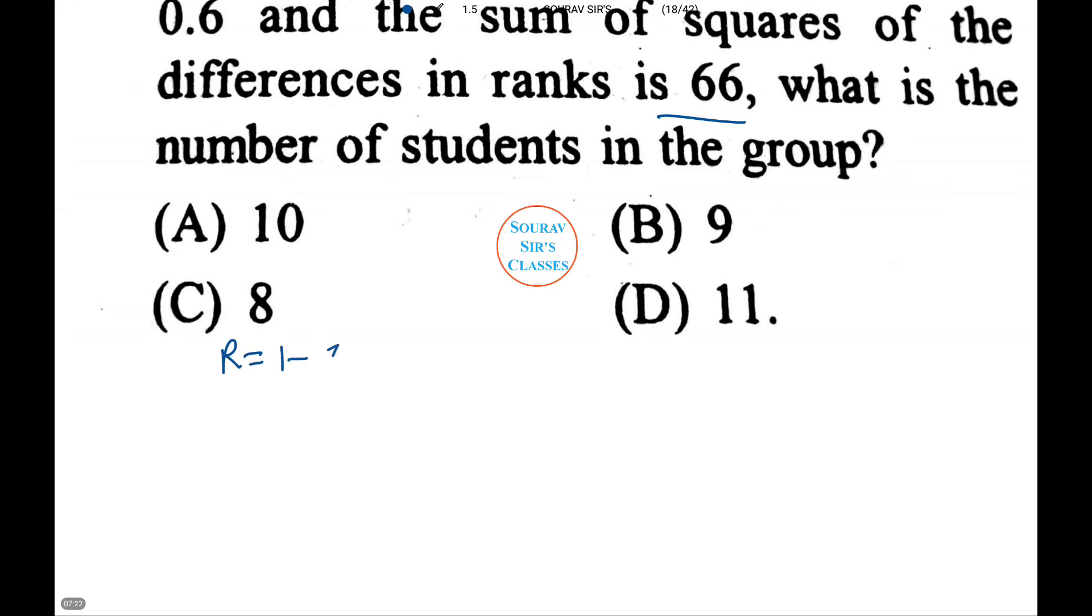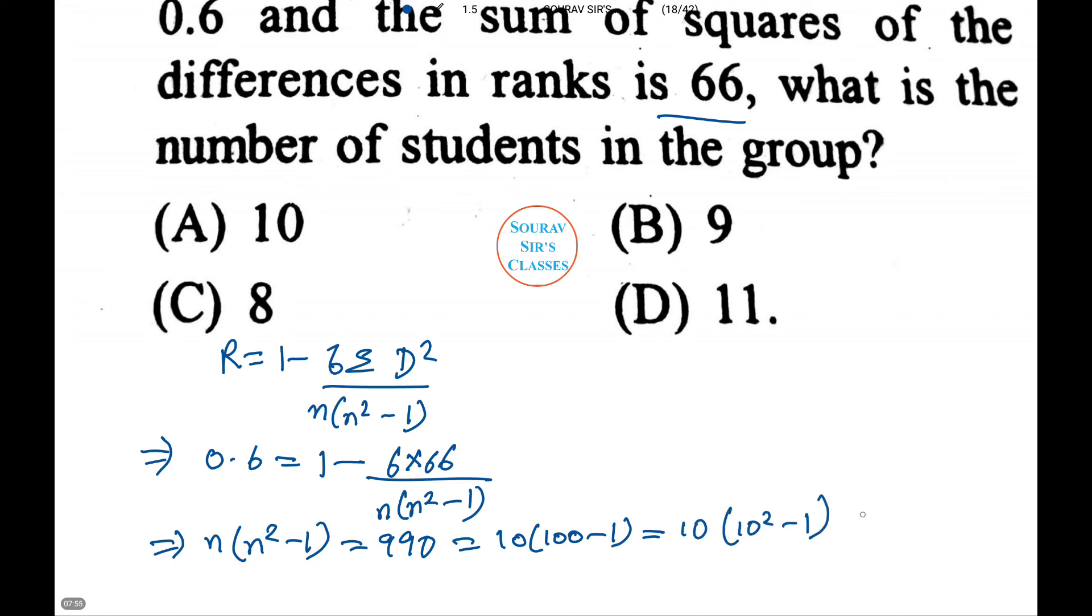Therefore r equals 1 minus 6 summation d square by N into N square minus 1. Or N into N square minus 1 equals 990, which equals 10 into 100 minus 1, which is equal to 10 into 10 square minus 1. From here we can analyze that N equals 10, as N must be a positive integer. Therefore option number A is the correct answer.